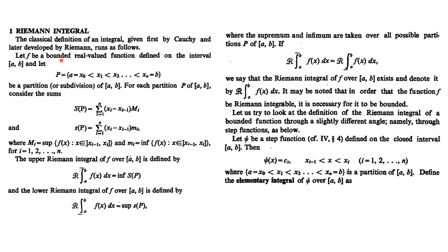Riemann integration is defined over the interval [a,b]. Let f be any bounded real-valued function on [a,b]. We first take the partition of [a,b] as x₀ < x₁ < x₂ < ... < xₙ. For this partition, we find the upper sums. Over each sub-interval, we find the maximum value of the function, called Mᵢ.